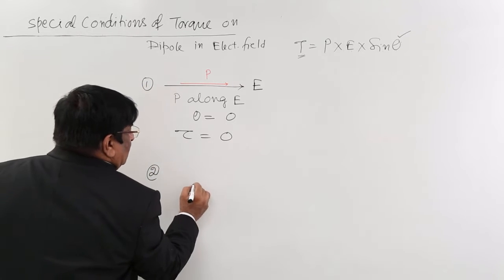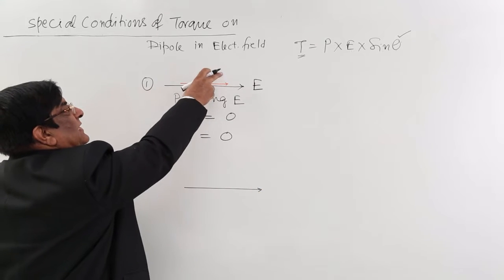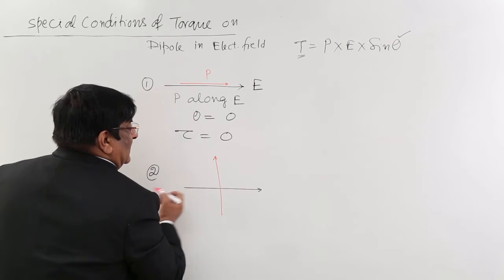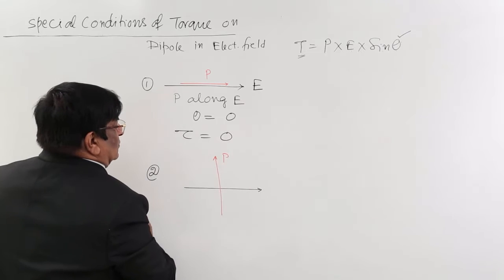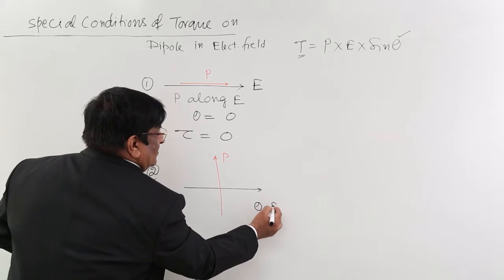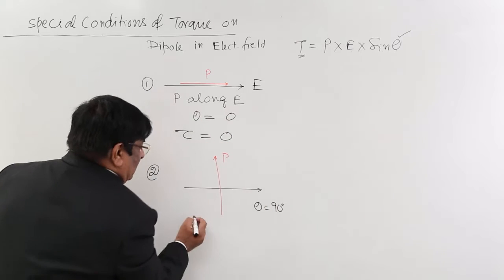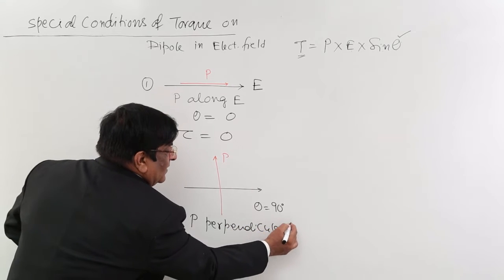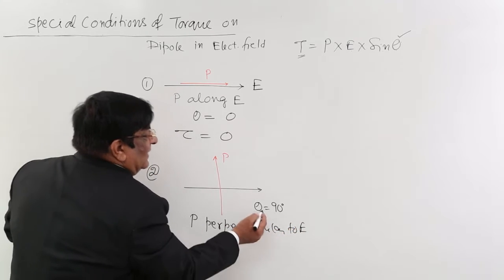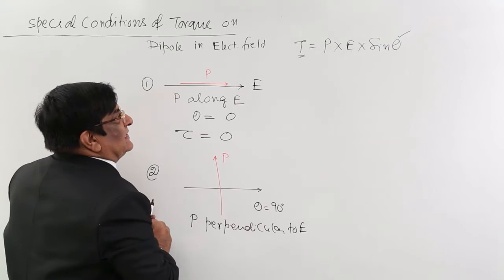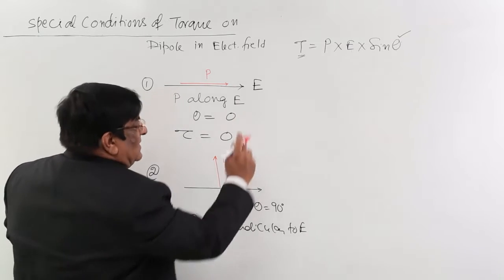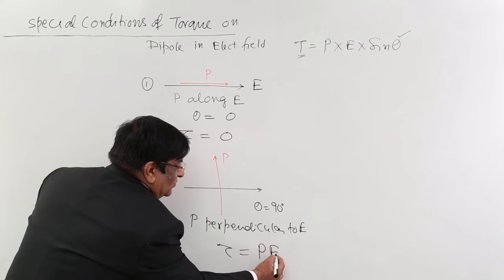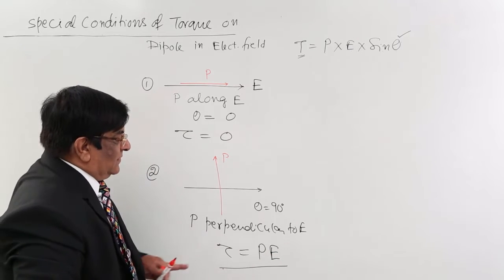Special condition number 2: the electric field is in the same direction, but now we rotate the dipole by 90 degrees. So here theta is equal to 90 degrees — P is perpendicular to E. Substituting 90 degrees, sine 90 is equal to 1, and this torque is P into E. This is the maximum torque, equal to PE.